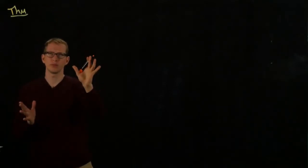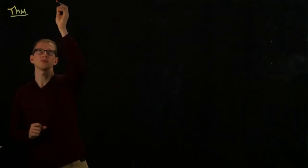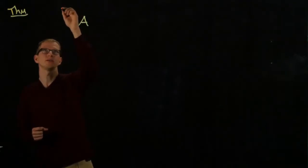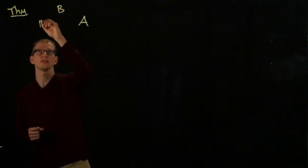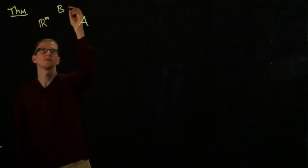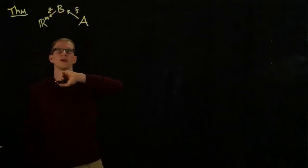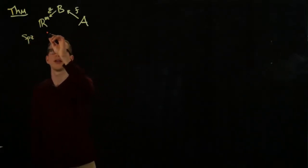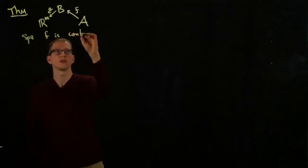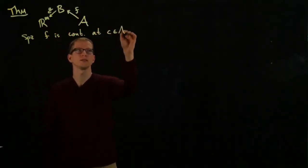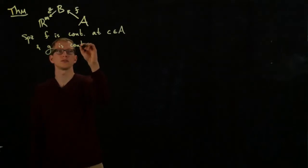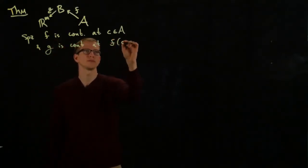So, again, I'd rather not put all the assumptions out. I think you can write down the assumptions for yourself. But if I have a function from A to B, and then it lands in R^M. So here I have F, G. And suppose that F is continuous at C in A. And suppose that G is continuous at F of C, which is in B.